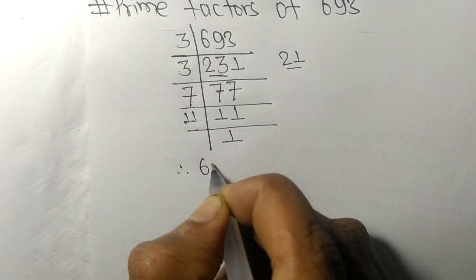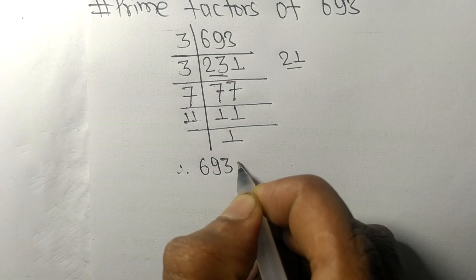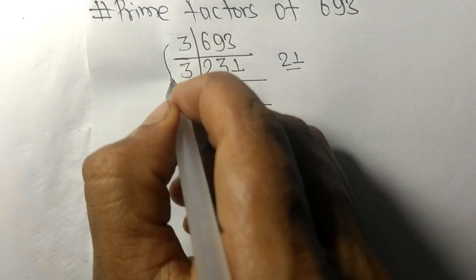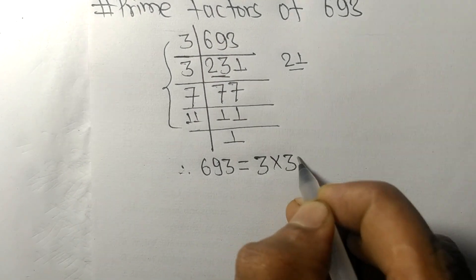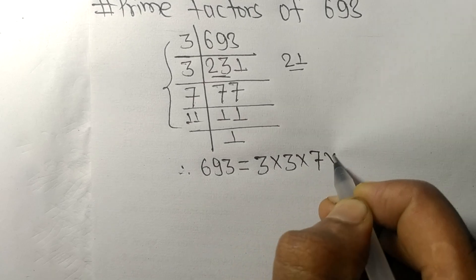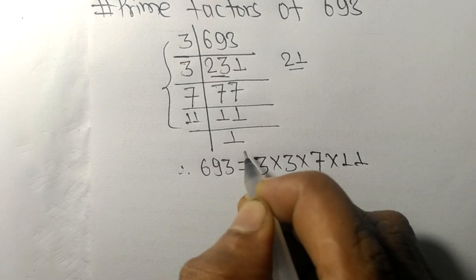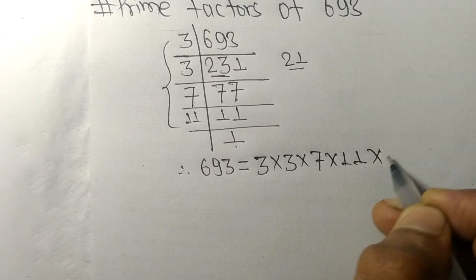Therefore 693 is equal to, from this side it is 3 times 3 times 7 times 11 and from here it is 1.